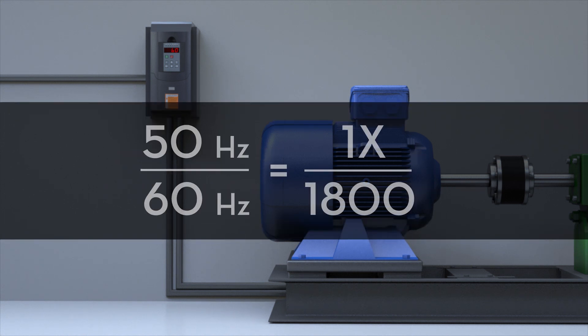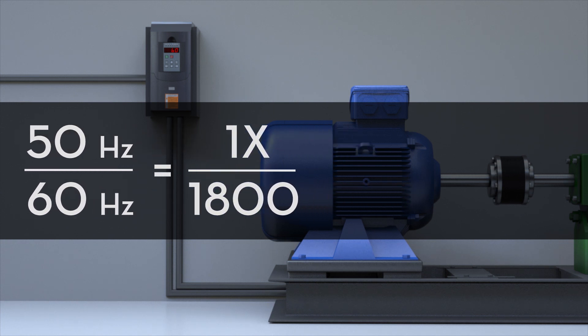For example, 50 Hz over 60 Hz, the standard cycle frequency in the US, is equal to 1x over 1800 RPM. This means that our 1x, or the RPM of our VFD, equals 1500.